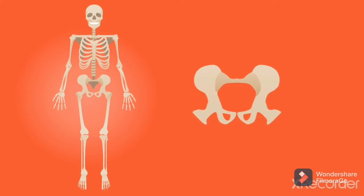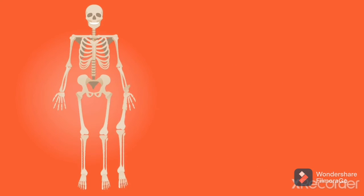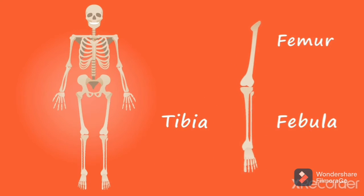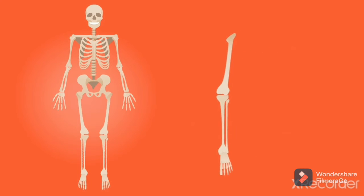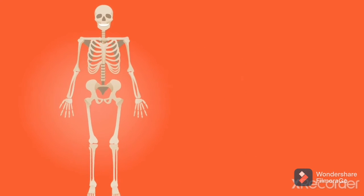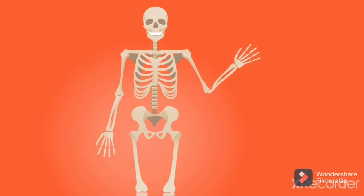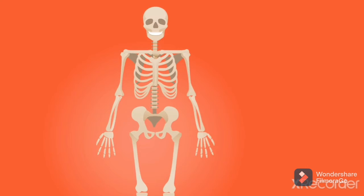This is the pelvic region that helps to bind our lower limbs. The lower limbs contain the femur, fibula, and tibia. The femur is the longest bone of our body.